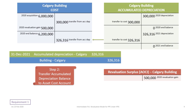We continue depreciating until the next revaluation. In our Uhura Communications example, the value changes again at end of 2021. Prior to adjusting for revaluation, we return to step two and transfer the accumulated depreciation balance to the cost account. One year's worth of depreciation — $326,316 — must be transferred. The journal entry dated December 31, 2021: debit accumulated depreciation for the Calgary building, credit the Calgary building asset $326,316.